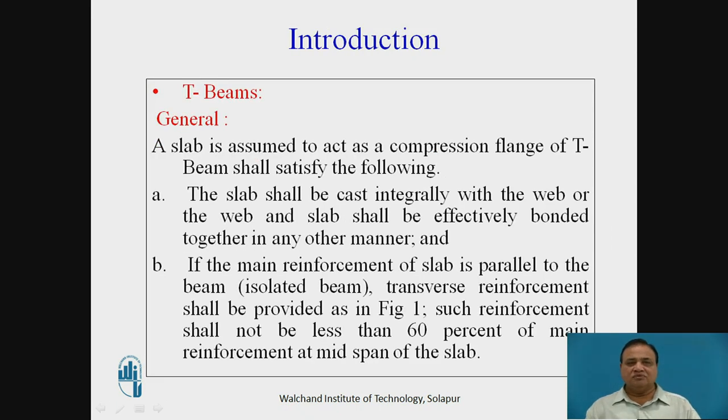Let us have general information regarding T-Beam. A slab is assumed to act as a compression flange of T-Beam shall satisfy the following. The slab shall be cast integrally with the web or the web and slab shall be effectively bonded together in any other manner. And the main reinforcement of the slab is parallel to the beam. That is, this happens in case of isolated beams, that is the secondary beams.